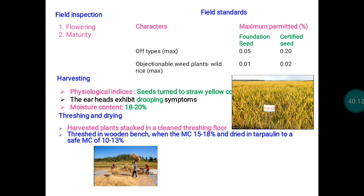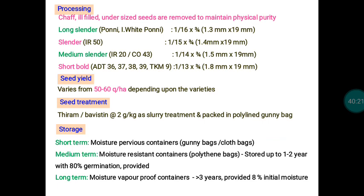During physiological maturity, we harvest the crop and reduce the moisture content. After separating the seed from the mother plant, the moisture content must be reduced to 10–13%, after which cleaning and grading operations can be carried out using machines.